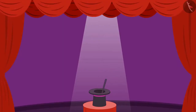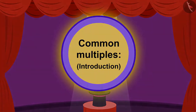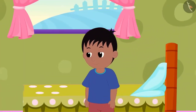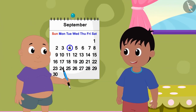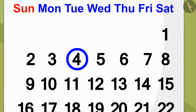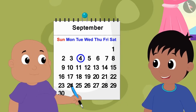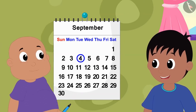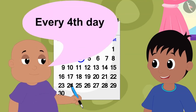Hello, children. In this video, we will learn about what are common multiples. Raju has come to Bablu's house. When he reached Bablu's house, he saw that Bablu was drawing circles on some dates on his home calendar. When Raju asks him what he is doing, Bablu tells him that he has enrolled in a math class and his class will be every fourth day.